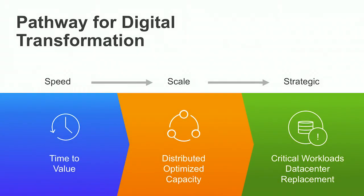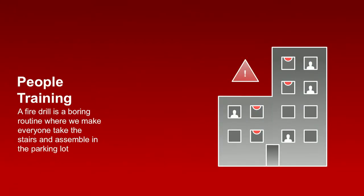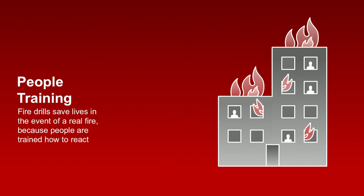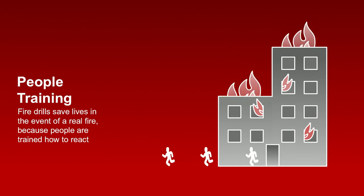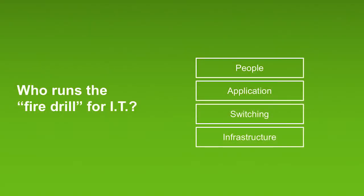So that's the pathway: speed, scale, and strategic. When we get to strategic workloads, availability is a critical aspect. Chris Pinkham, one of the original engineering managers who helped build EC2 at AWS, said: you can't legislate against failure, so focus on fast detection and response. To illustrate this, think about fire drills — everyone in a large building occasionally has to file out, not use the elevators, stand in the parking lot, and do a roll call. It's boring and people groan, but every now and again the building really is on fire, and in that case it saves lives because people are trained to react without panicking.